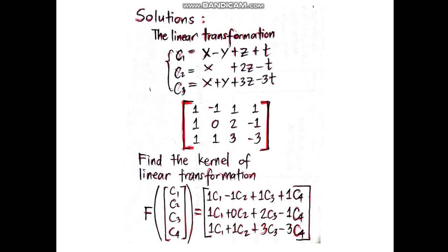Here are the solutions. The linear transformation is presented with the matrix with entries: 1, -1, 1, 1; 1, 0, 2, -1; 1, 1, 3, -3, which are the numerical coefficients of the linear transformation we see above.